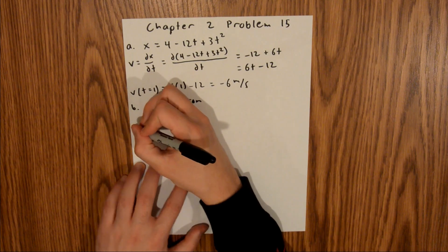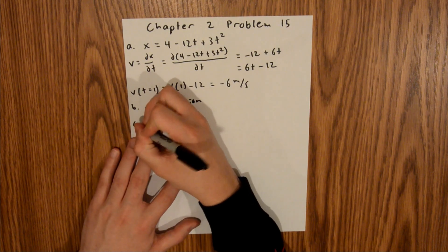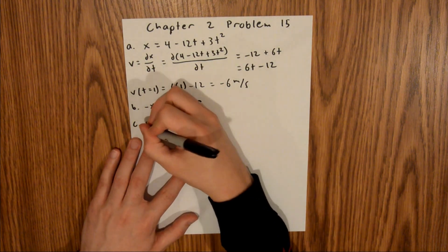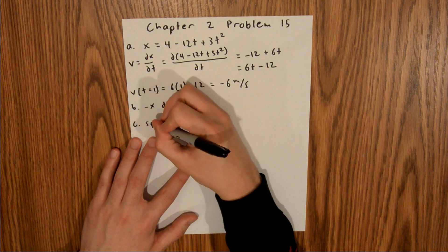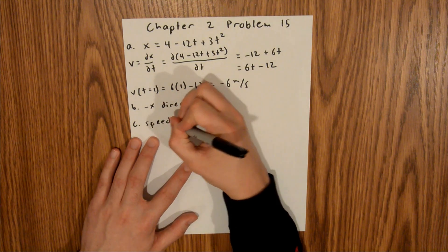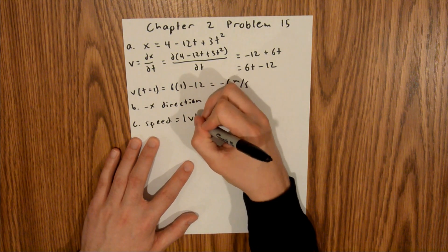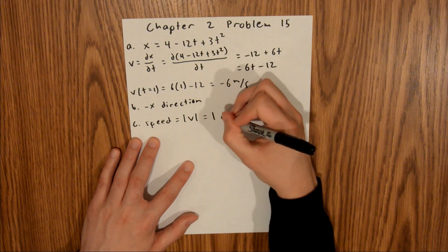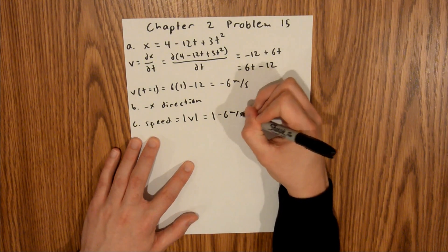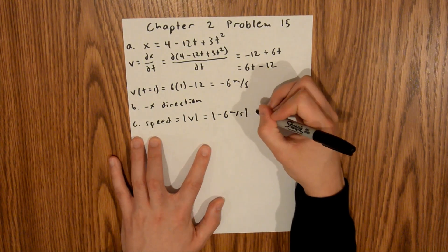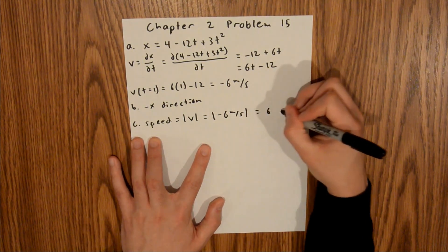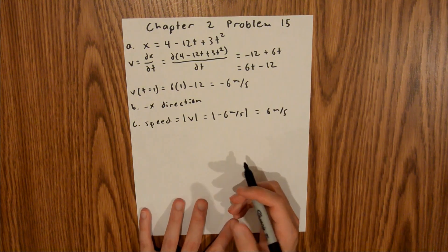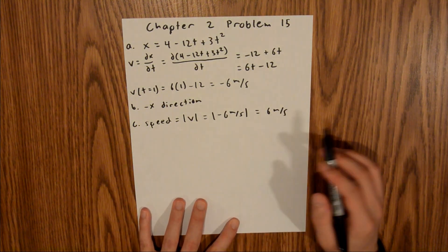For part C, we are asked to find its speed. Speed is equal to the absolute value of velocity, which is equal to the absolute value of negative 6 meters per second, which equals 6 meters per second. That's your final answer for part C.